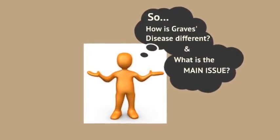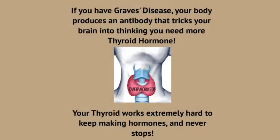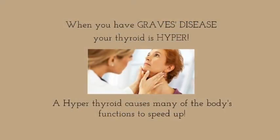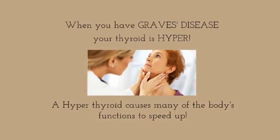So what is the main issue with Graves disease? If you have Graves disease, your body produces an antibody that tricks your brain into thinking you need more thyroid hormone. Your thyroid works extremely hard to keep making hormones and never stops. When you have Graves, your thyroid is hyper, and this causes many of the body's functions to speed up.